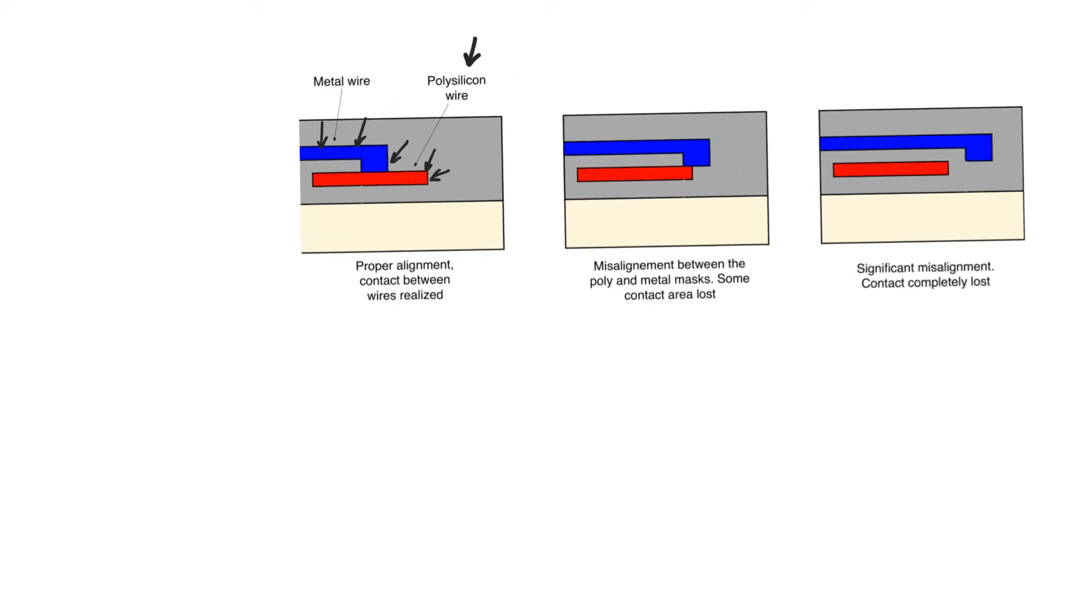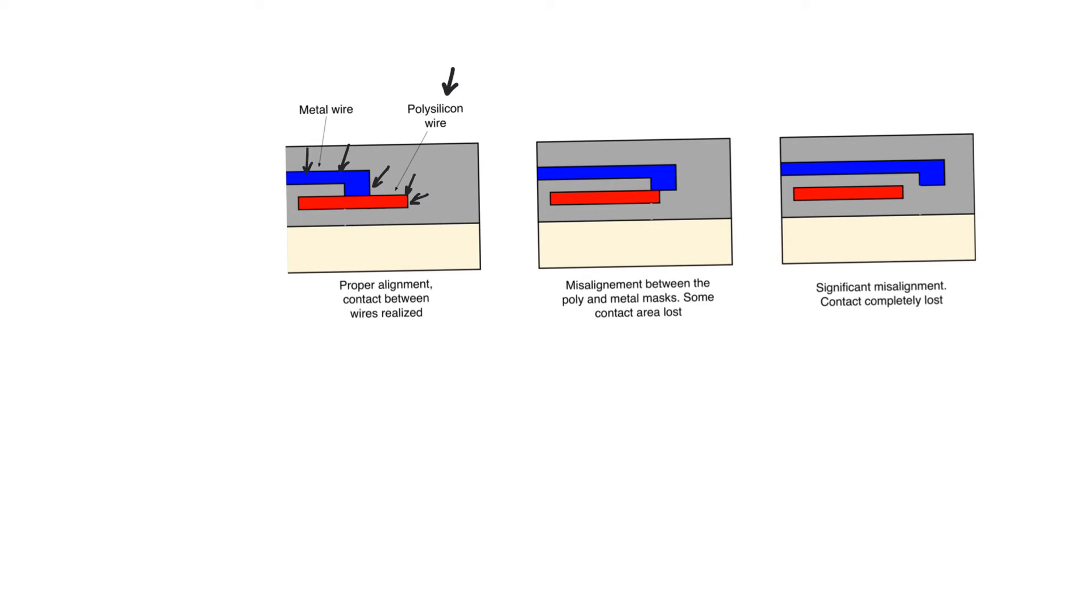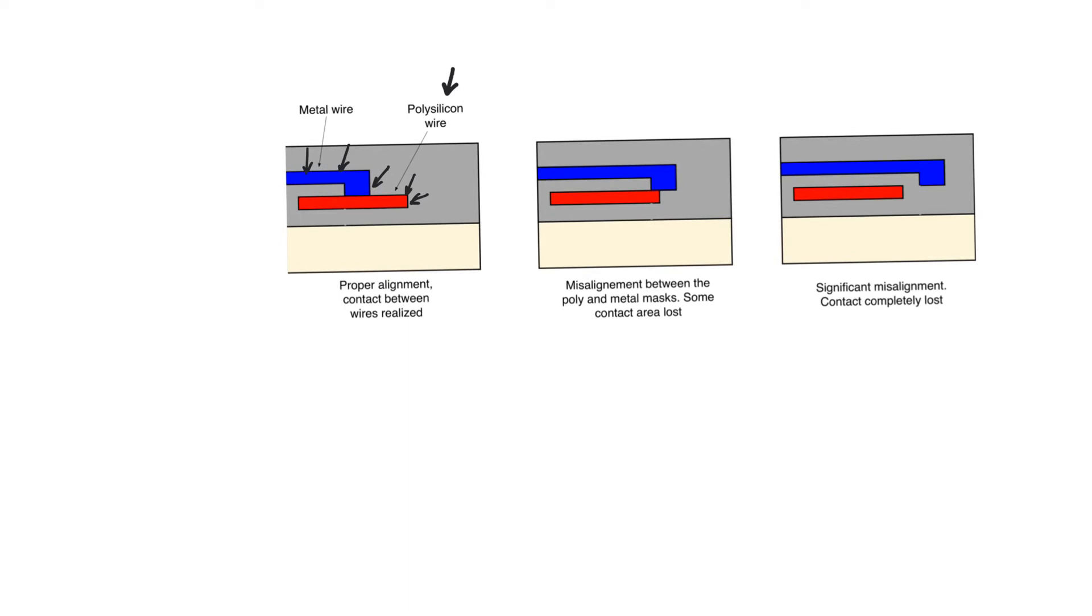So if there's a misalignment between how the mask for the polysilicon layer and the mask for the metal layer are put on top of the wafer, then we could have a situation like in the middle where the metal wire is a little bit shifted to the right.